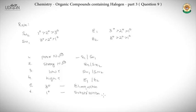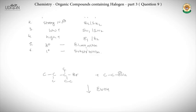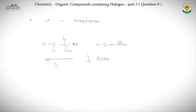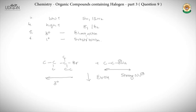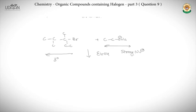Applying these rules to question 9: the alkyl halide given is a 3° halide, and CH3CH2ONa provides ethoxide, which is a strong nucleophile, with ethanol as solvent. Since we have a 3° halide, elimination is generally favored. With a strong nucleophile, E2 or SN2 applies. Since it's a 3° halide, E2 elimination will be the predominant reaction pathway.